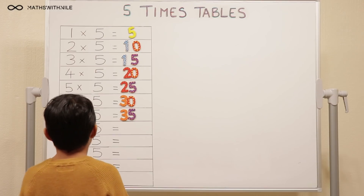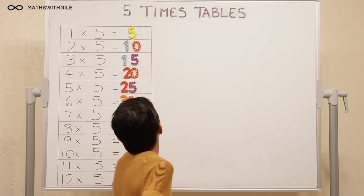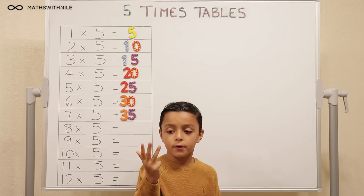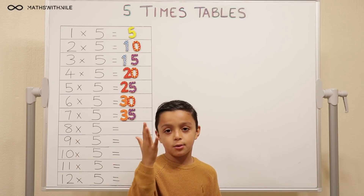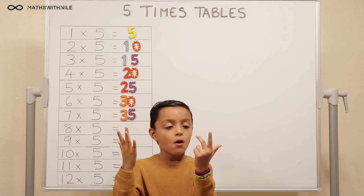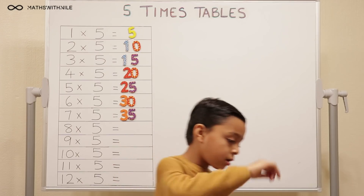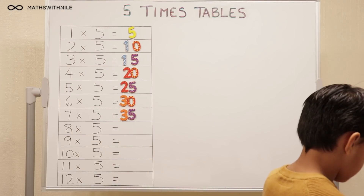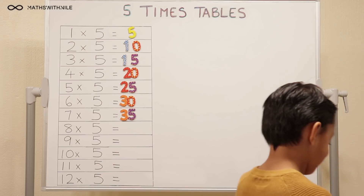Eight times five. Five, ten, fifteen, twenty-five, thirty-five, forty. Forty. And take your time when you're counting.